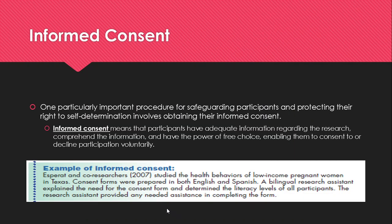One particularly important procedure for safeguarding participants and protecting their right to self-determination involves obtaining informed consent. Informed consent means that participants have adequate information regarding the research, comprehend the information, and have the power of free choice — or autonomy — enabling them to consent to or decline participation voluntarily. Researchers usually document the informed consent process by having participants sign a consent form. This form includes information about the study purpose, specific expectations regarding participation, how much time will be required, the voluntary nature of participation, and the potential costs and benefits.